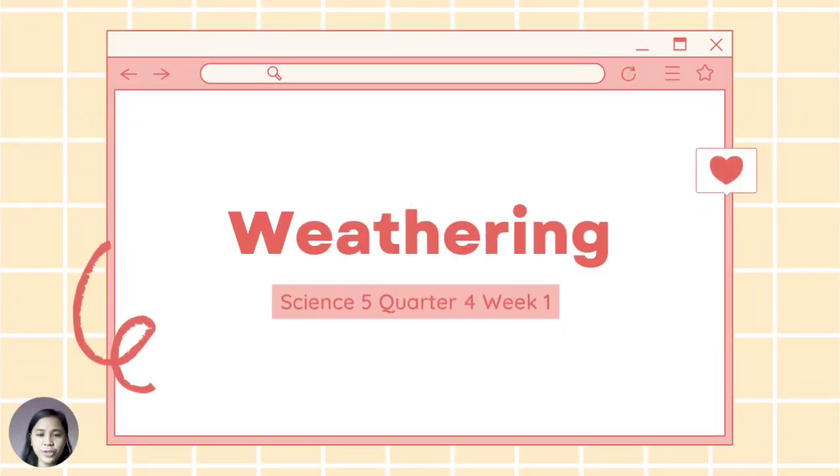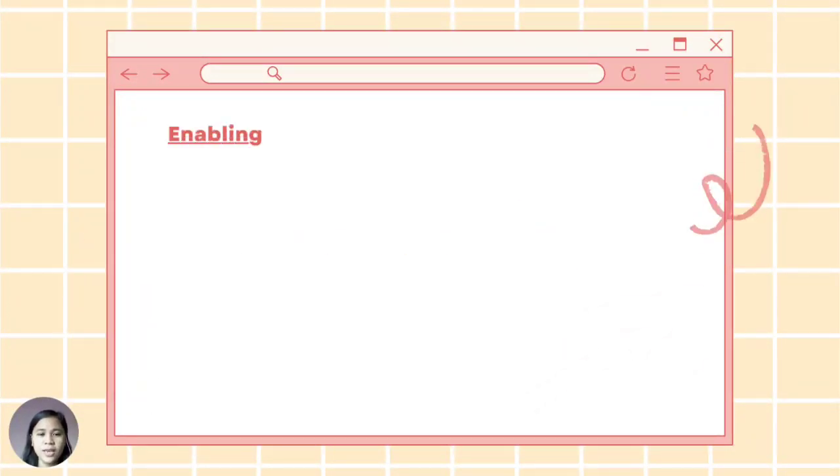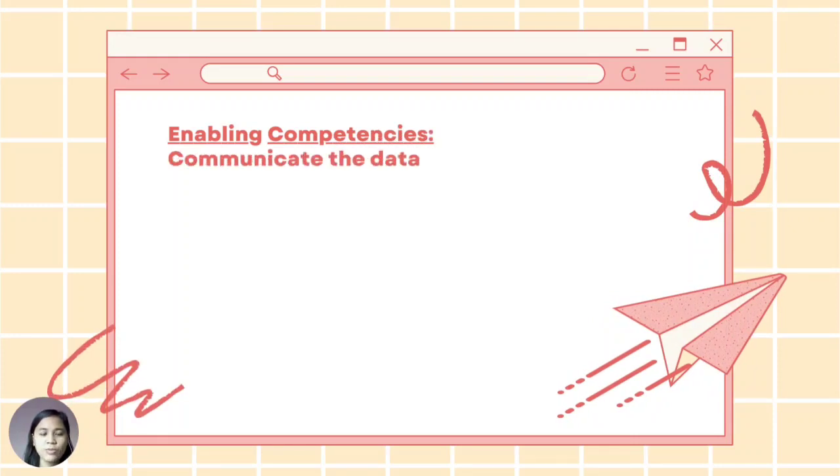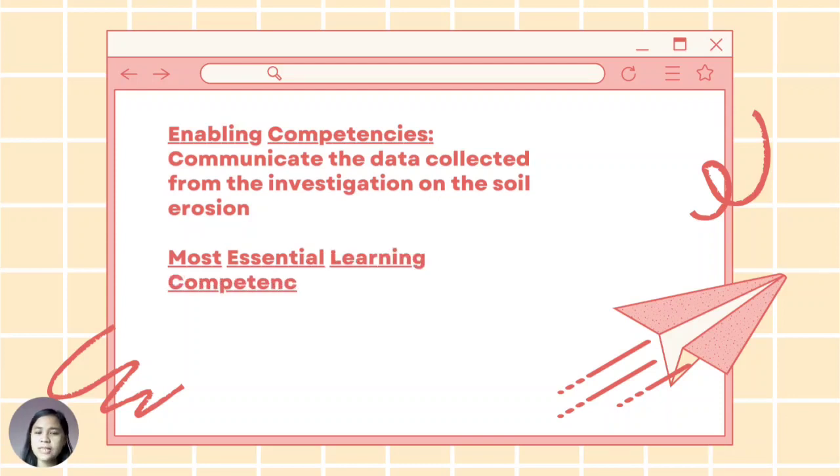Weathering, Science 5, Quarter 4, Week 1. Enabling competency: communicate the data collected from the investigation on soil erosion. Most essential learning competency: describe how rocks turn into soil.